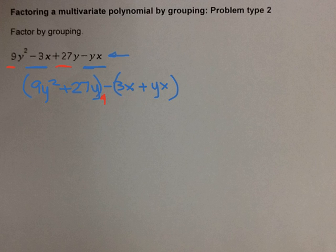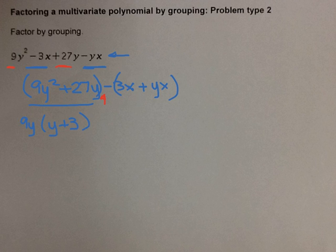Now I'm going to keep working. From my first group I can factor out a 9y, and I'm left with a y plus 3. And over here I have a minus, and I can factor out an x, leaving me with a 3 plus y.